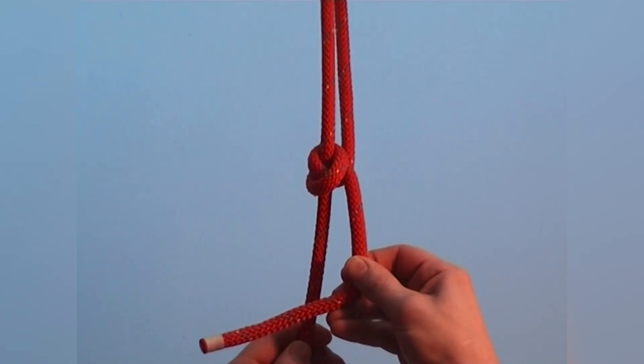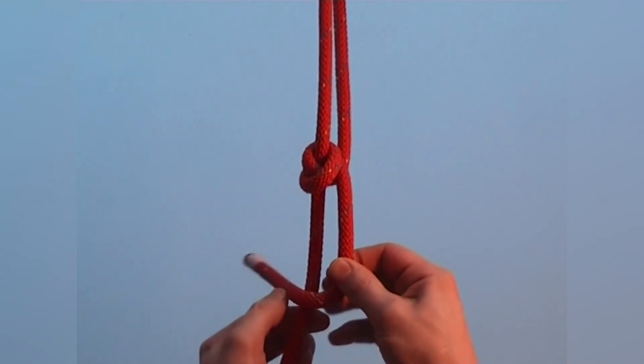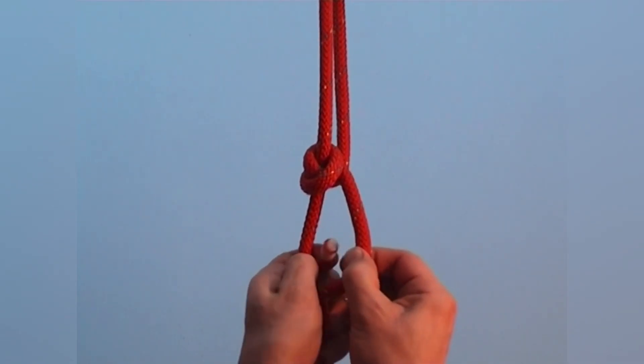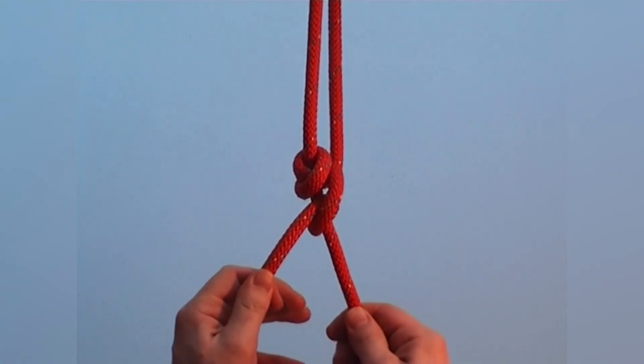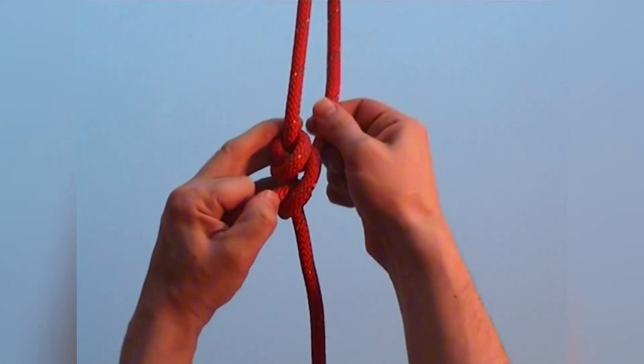Finally, make a half hitch around the standing part outside the eye in the same direction of rotation. Tighten the knot well.